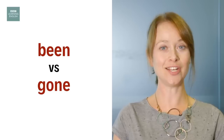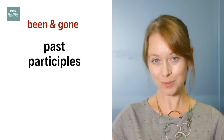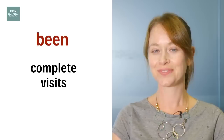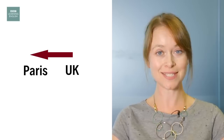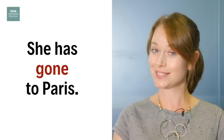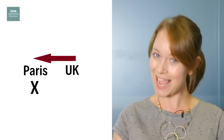Hi, Sian here for BBC Learning English and today we're going to look at 'been' and 'gone'. Both are past participles used with the present perfect, but they don't have the same meaning. We use 'been' to talk about complete visits — 'she has been to Paris' means she visited Paris at some point in the past and now she's back in the UK. When we say 'been' in a sentence, it becomes weak: 'she's been to Paris'. But 'she's gone to Paris' means she travelled to Paris and she's still there now — she's on holiday. Been: you go somewhere and return. Gone: you go somewhere but don't return.